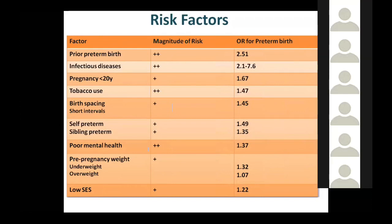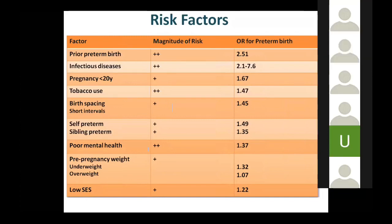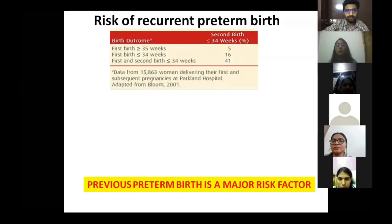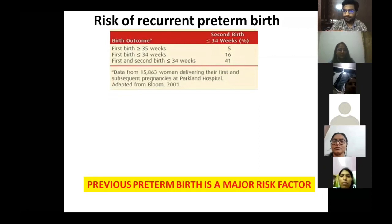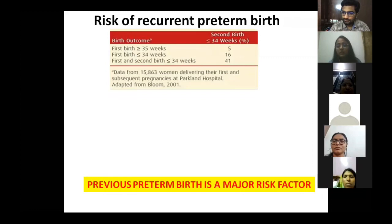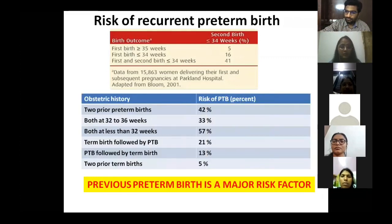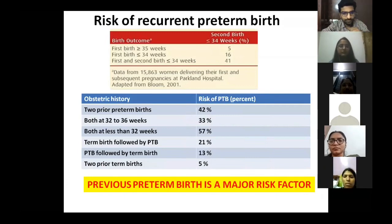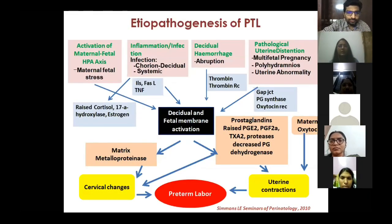Prior preterm birth and infectious diseases both have an odds ratio of more than two, making them major risk factors. If a previous preterm birth occurred before 34 weeks, approximately 16 percent will deliver preterm again; with two previous preterm births, this rises to 41 percent.